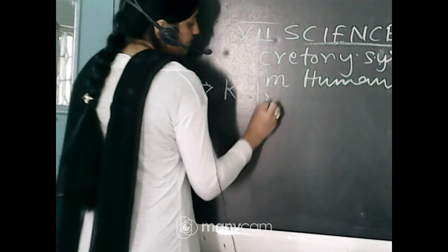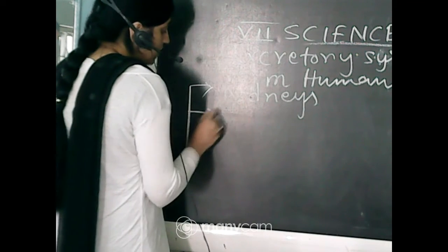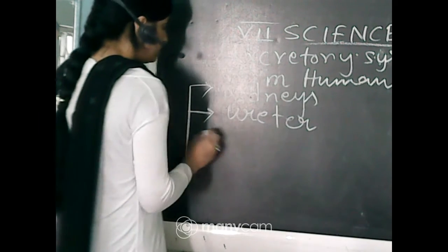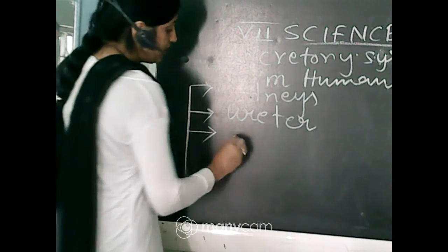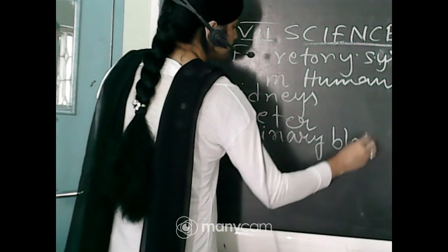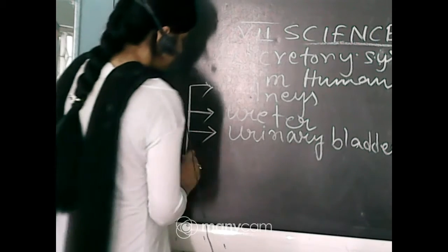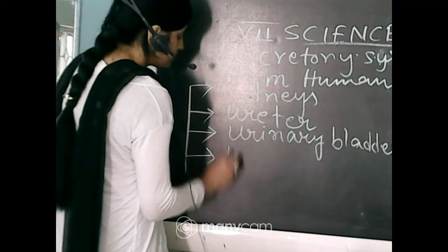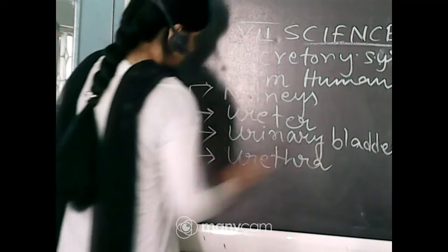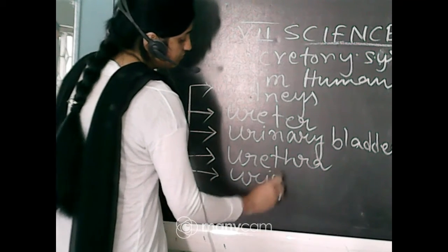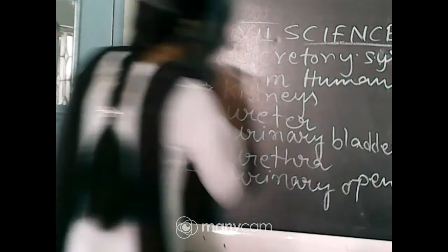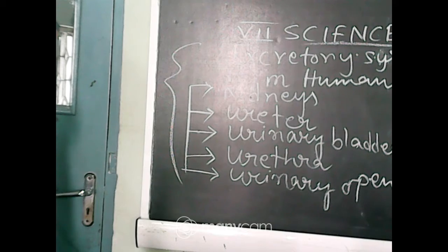Two kidneys are present. Two ducts called ureters are present. There is also the urinary bladder — a pouch-like structure where urine is stored. The urethra is a muscular structure which helps to release urine, and there is the urinary opening to release the urine. These are the main parts of the excretory system: kidneys, ureters, urinary bladder, urethra, and urinary opening.